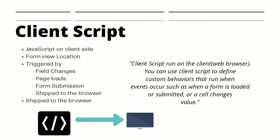The majority of the time you use client script on the form view. When you are within an actual record on the form view, you might use client script for when a specific value changes, or you would like to manipulate another value. Client scripts are triggered by field change, page load, form submission, and cell edit. Within the list view you can also fire client script when a specific cell changes.